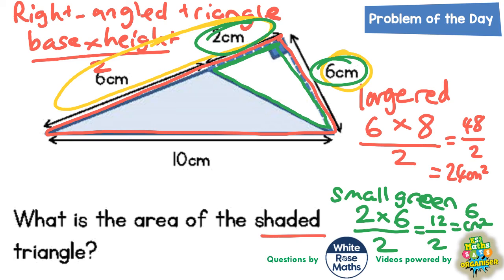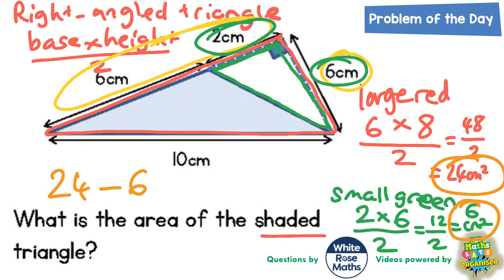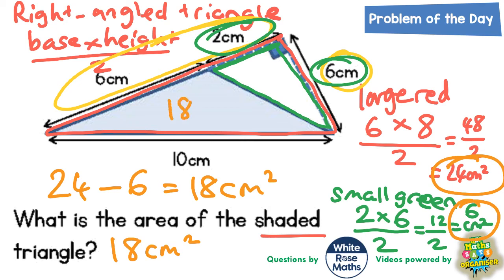So the area of the small green triangle is six centimeters squared. What we need to do now is subtract the small green one from the large red one, so that's 24 subtract six. 24 subtract six is 18 centimeters squared, and that is the area of the shaded triangle — 18 centimeters squared.